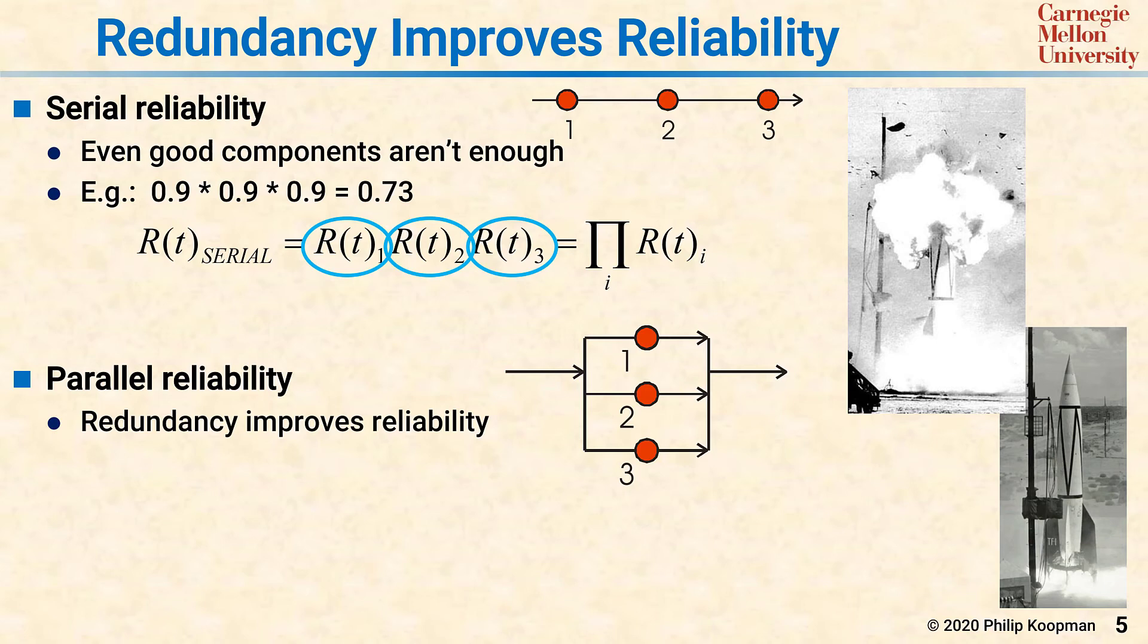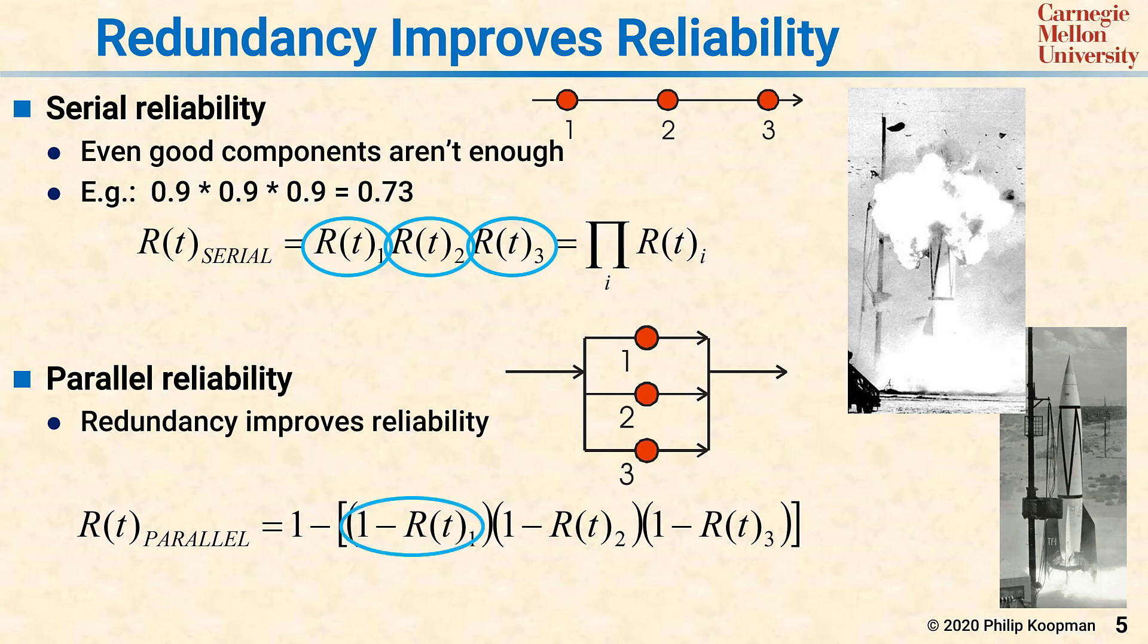It's really unlikely that all three components will fail at the same time, even if one or two of the components is relatively unreliable. With probability math, this computation is done in terms of the unreliability, where unreliability is 1 minus R(t). We start by taking the unreliability of the three components, meaning that the first component has to fail, and then multiply it by the next component having to fail, and then multiply it by the third component having to fail. That gives us the unreliability of the system, so we subtract it from 1 to get the reliability.